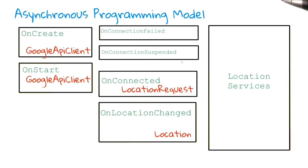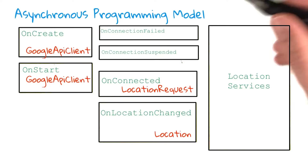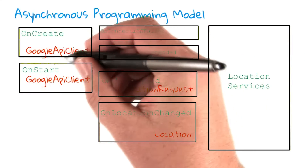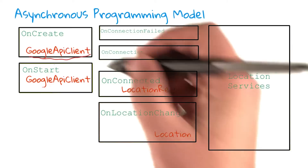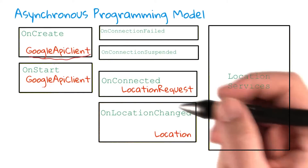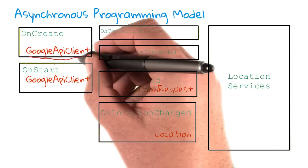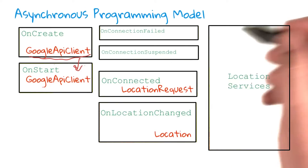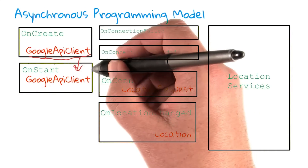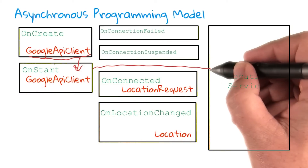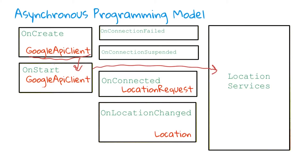When building an app that uses the Google services, you'll generally use an asynchronous programming model that looks a little bit like this. In the onCreate of your activity, you create a Google API client. And then in the onStart of your activity, you connect that Google API client to the relevant APIs — in this case, location services.